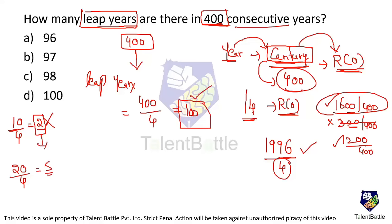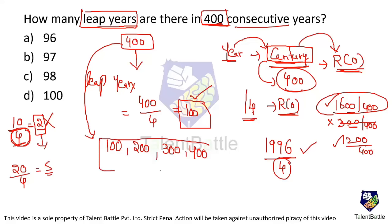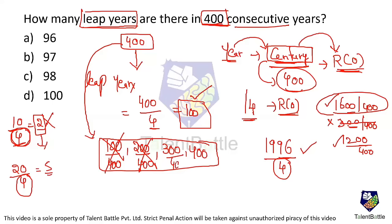But actually the answer is not 100. Why? Because when we divide by four, it considers centuries as leap years too. In 400 years, the centuries are: 100, 200, 300, and 400 — so four centuries total. When we divide 100 by four it appears to be a leap year, but 100 is a century and must be divided by 400 — so it's not a leap year. Similarly, 200 and 300 are also not leap years, but are counted when dividing by four. However, 400 is a leap year because it is exactly divisible by 400.